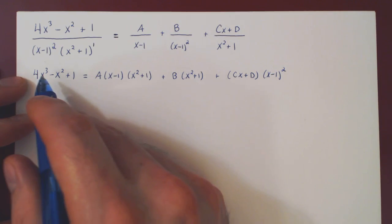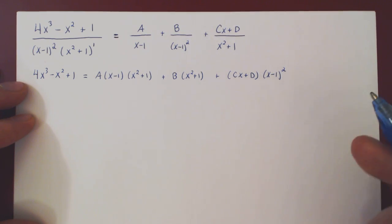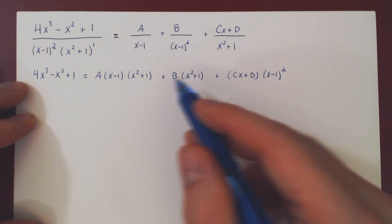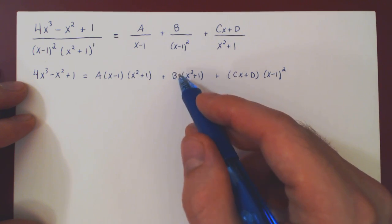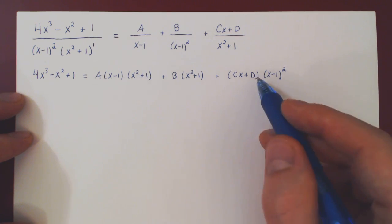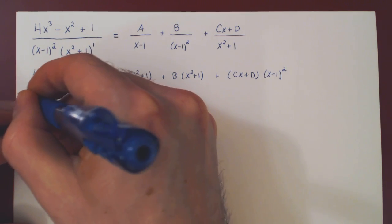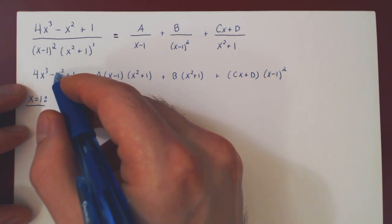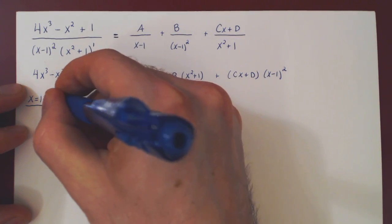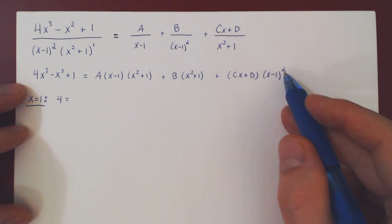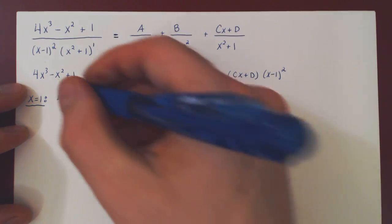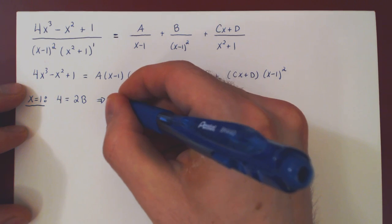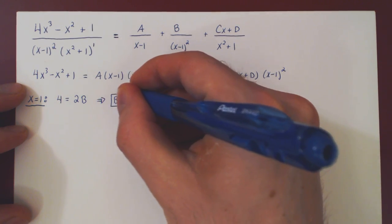Can we choose a value of x that eliminates all coefficients except one? From the linear term, choosing x equal to 1 makes the first term go away and the third term go away, allowing us to solve for b independently. Letting x equal 1: on the left we get 4 minus 1 plus 1, which is 4. On the right we're left with 1 plus 1, which is 2, times b. So 4 equals 2b, which means b equals 2.